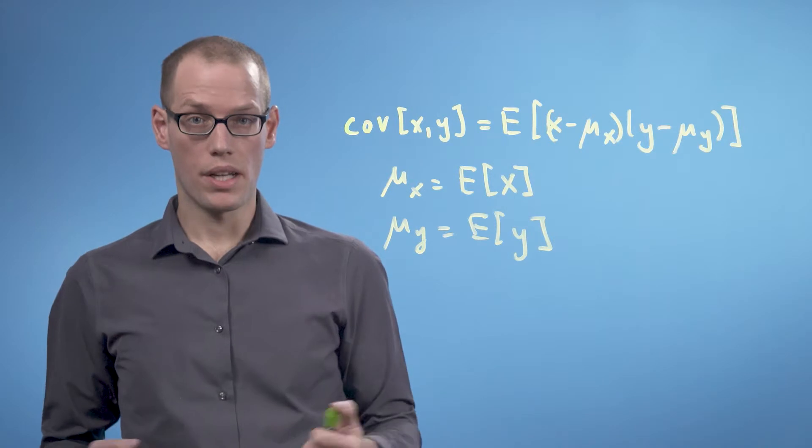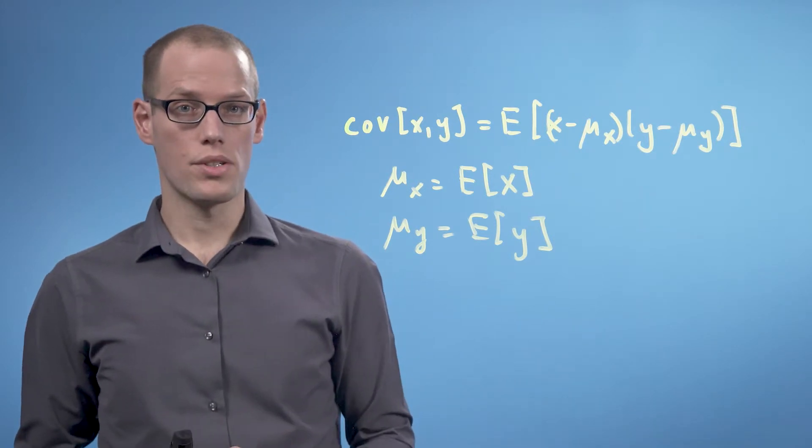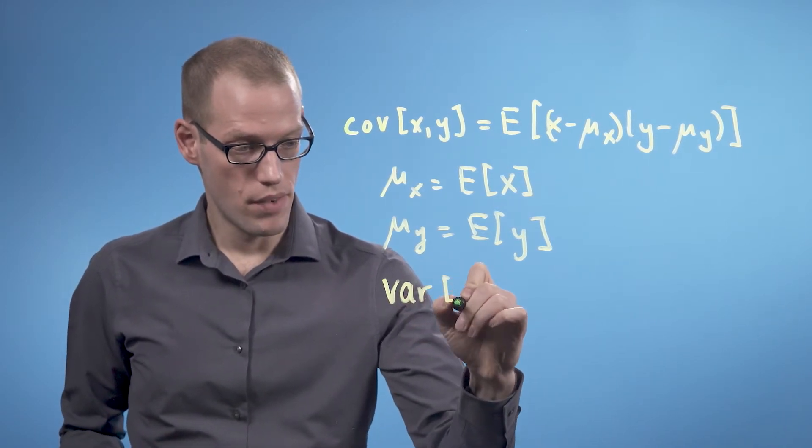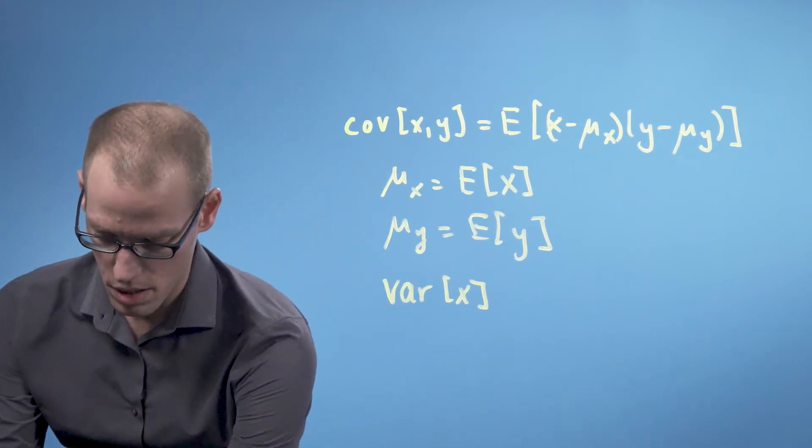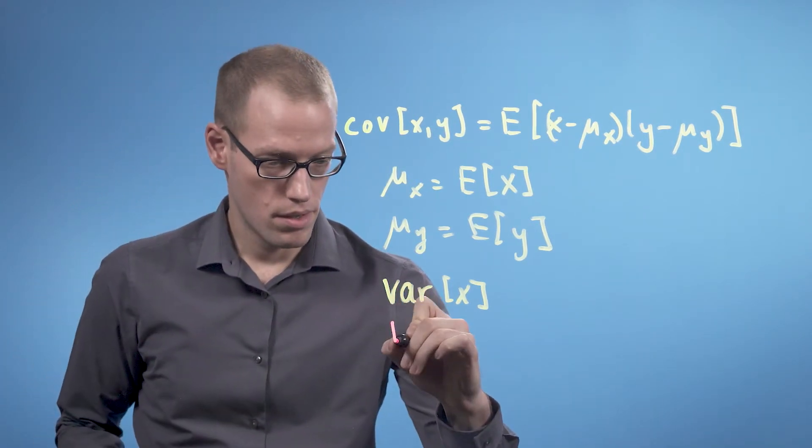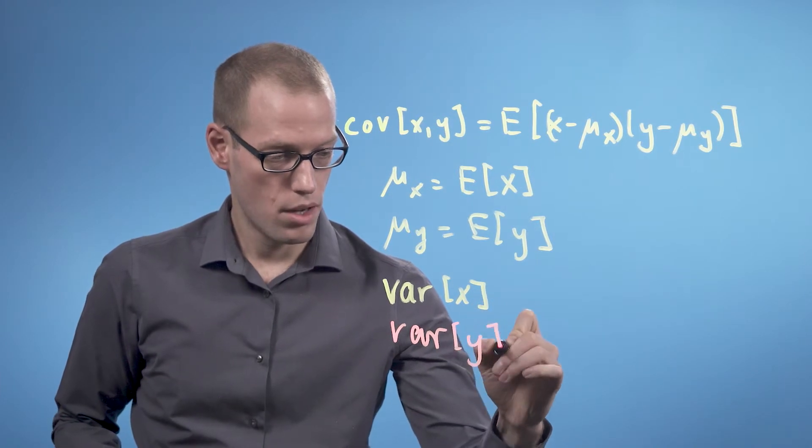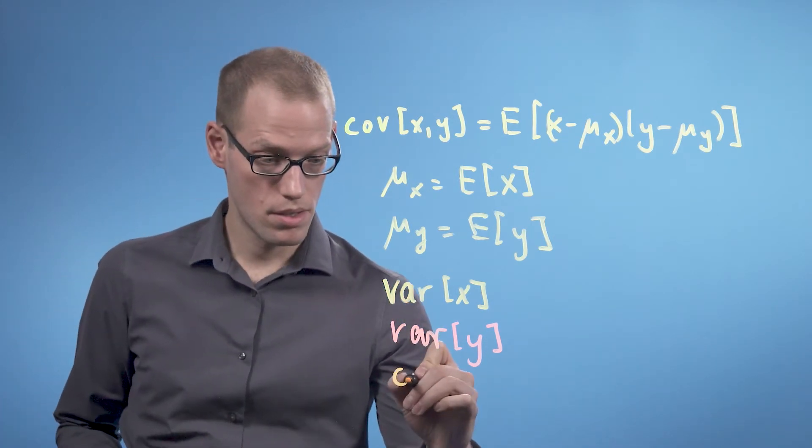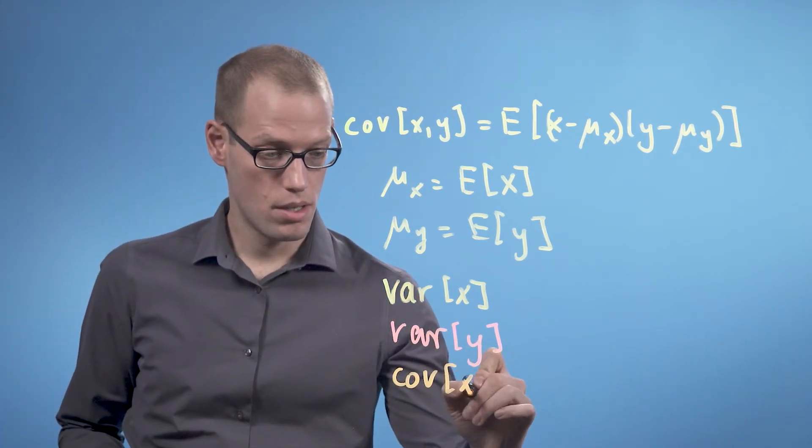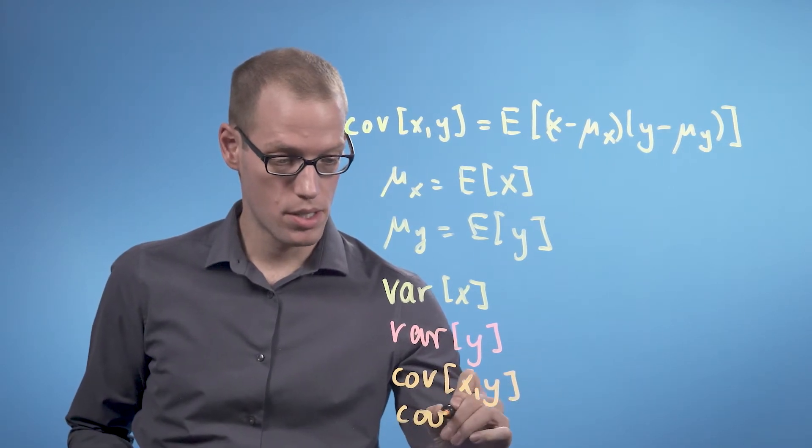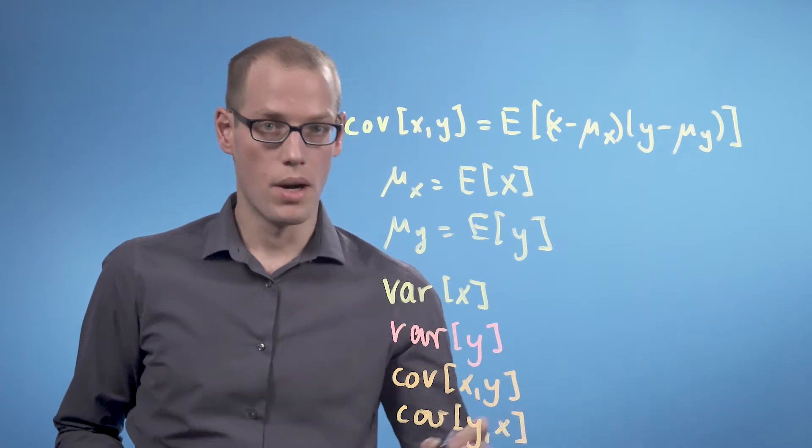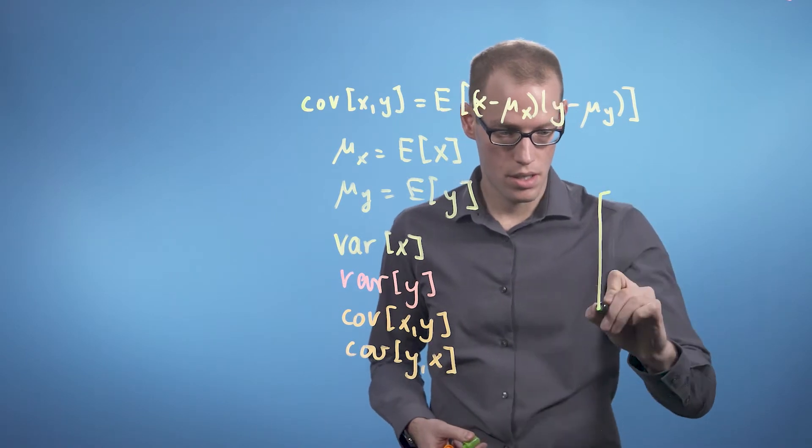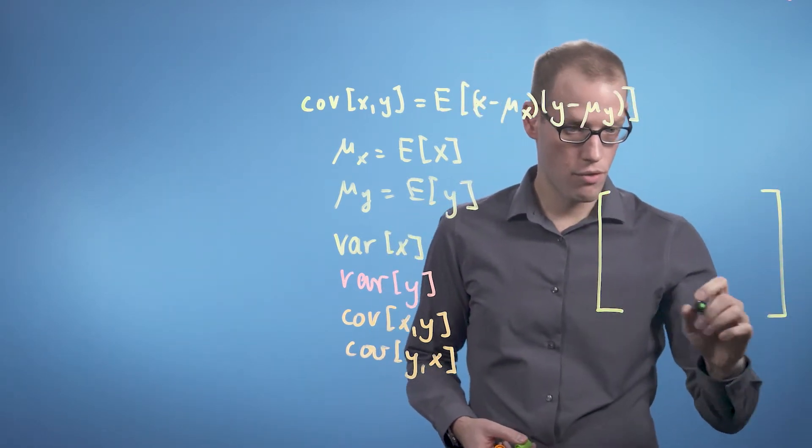For 2D data, we can therefore obtain four quantities of interest. First, we have the variance of x, the variance of y, and the covariance terms: the covariance between x and y, and the covariance between y and x. We summarize these values in a matrix called the covariance matrix with four entries.